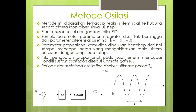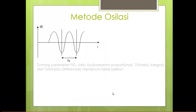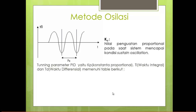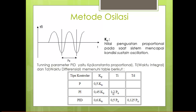Nilai penguatan proporsional atau KP pada saat sistem mencapai kondisi sustained oscillation disebut sebagai ultimate gain KU. Periodenya disimbolkan sebagai PU. Tuning parameter PID yaitu komponen KP, TI, dan TD nanti bisa disusun sebagaimana di dalam tabel, misalnya untuk P adalah 0.5 × KU. Untuk PI dan PID juga sama sebagaimana di dalam tabel.